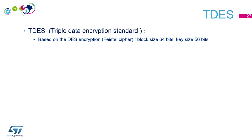Let's start with Triple DES. Triple DES, or Triple Data Encryption Standard, is based on the simpler DES (Simple DES), which relies on the Feistel Cipher mathematical problem. The block size for this algorithm is 64 bits and the key size is 56 bits.